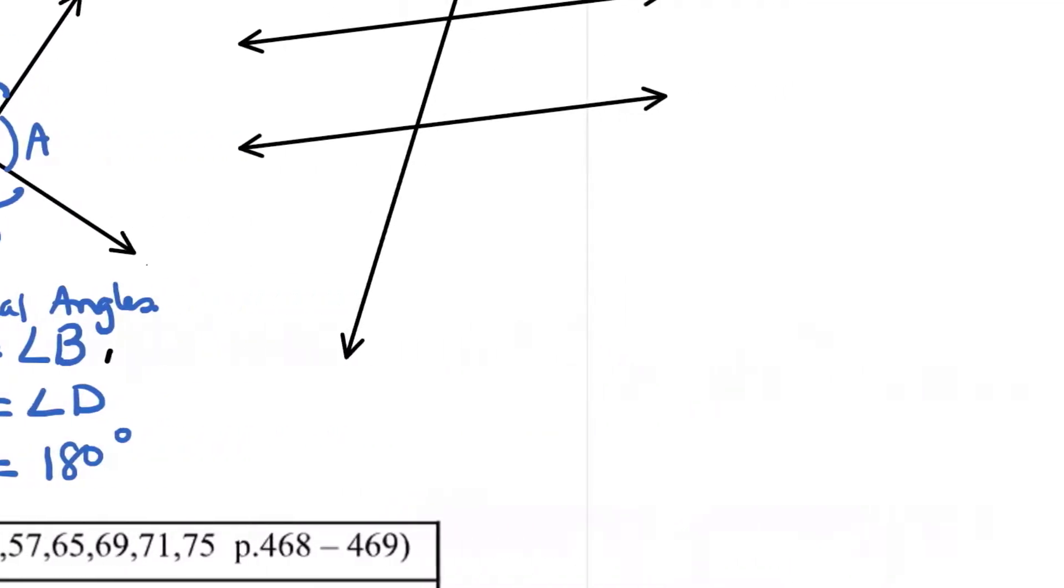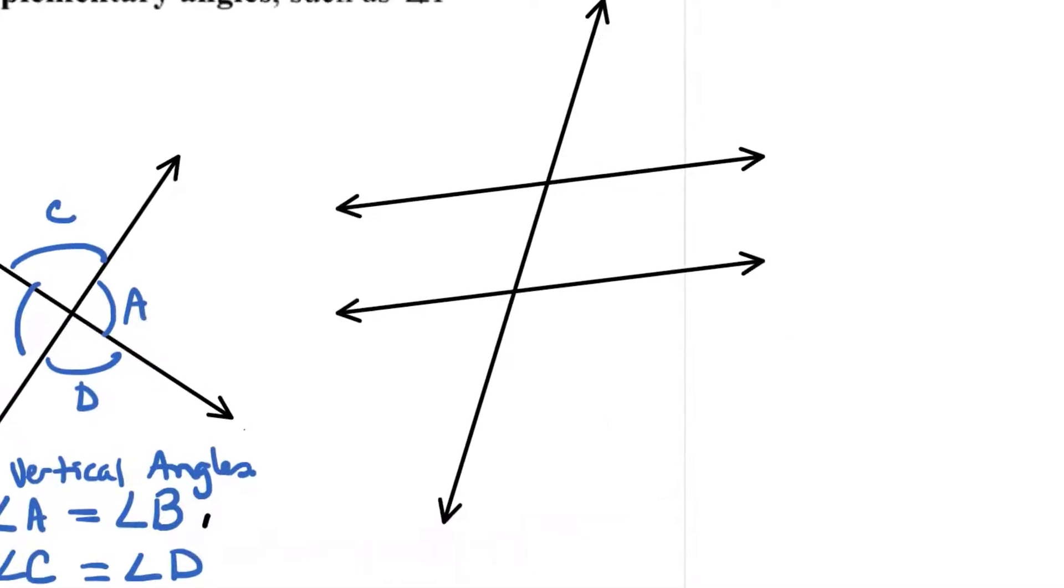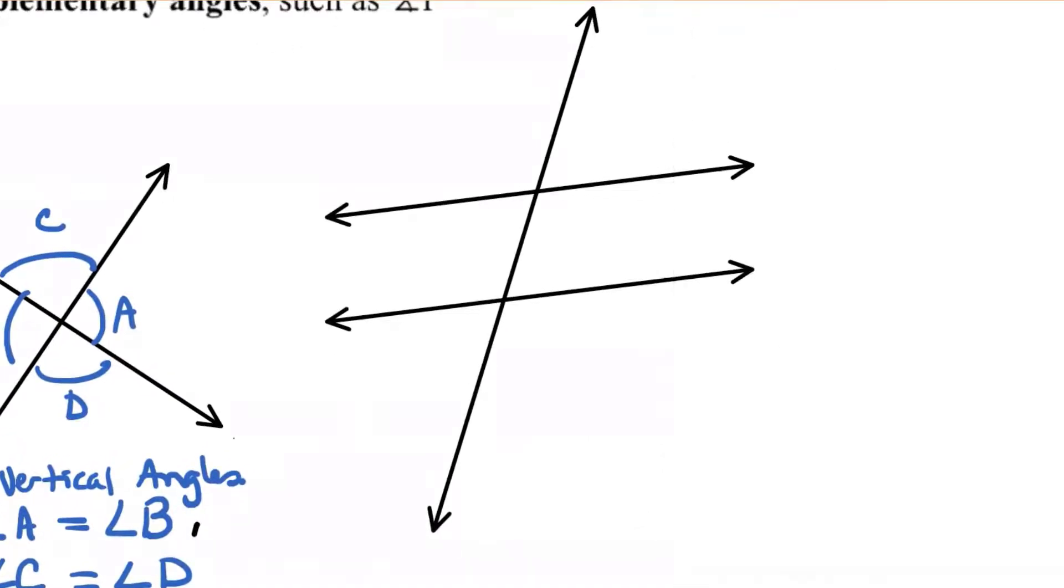And then the other kind of diagram that we'll commonly see is a diagram with, actually, I need to update this diagram. It's missing a little piece of information. You have to have these little marks on here to show that these two lines are what? Parallel. Very good.